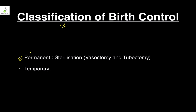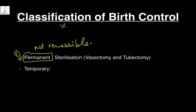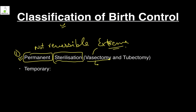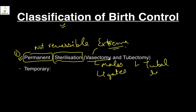Classification of birth control is basically of two types. First is permanent, which is not reversible — also called sterilization. It is vasectomy in males, where you ligate the vas deferens, while tubectomy or tubal ligation involves the oviduct in females. We will deal with this permanent method in the next tutorial.